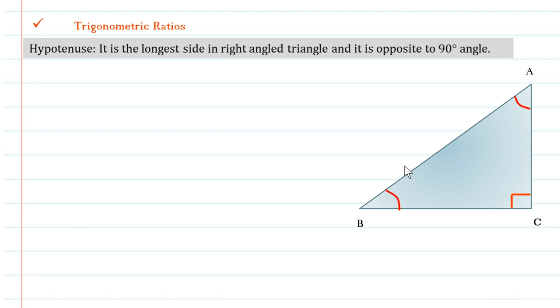Firstly, it is the longest side in a right-angled triangle and it is the side opposite to the 90 degree angle. So in triangle ABC, the side AB is the hypotenuse.